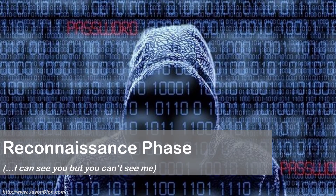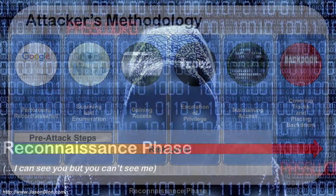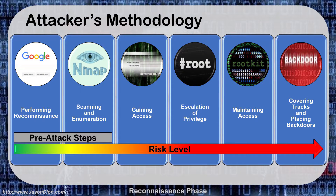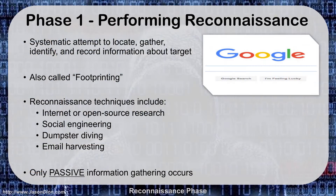The reconnaissance phase — I can see you, but you can't see me. As we look at the hacker's methodology, the first step is reconnaissance, and we spend about 80 to 90% of our time in this phase before we actually begin our exploitation. During phase one, we perform reconnaissance — our systematic attempt to locate, gather, identify, and record information about our target.